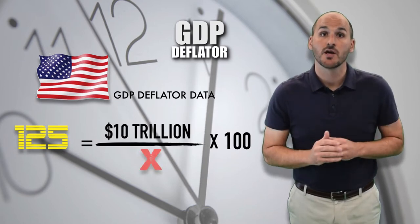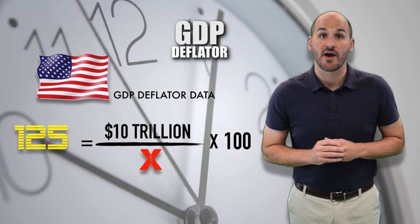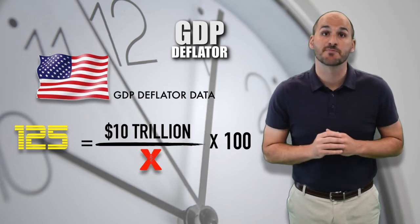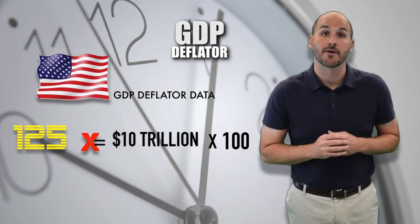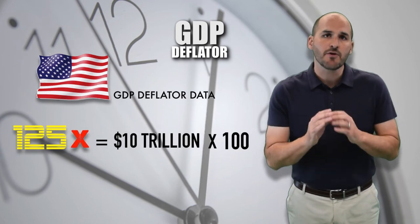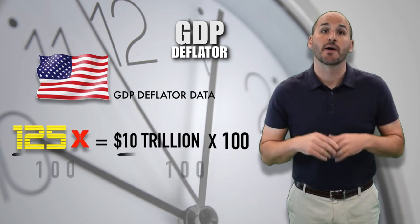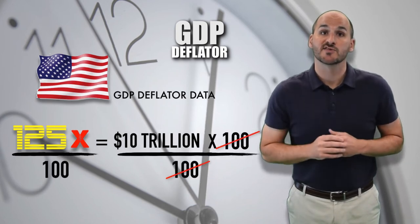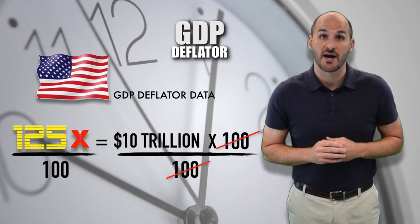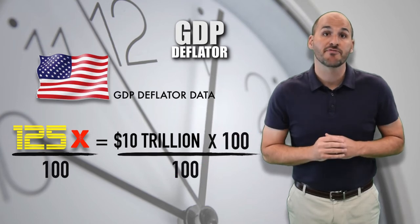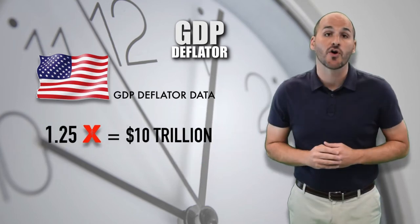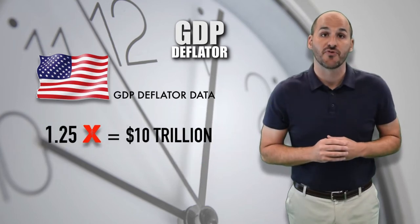To find real GDP, we will solve for X. Our first step is to multiply both sides by X to eliminate the denominator. Then we divide both sides by 100, so we can create a simpler equation for X. Dividing 125 by 100 gives us a result of 1.25.